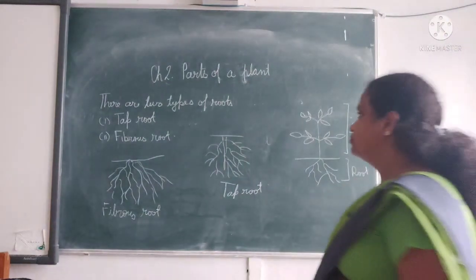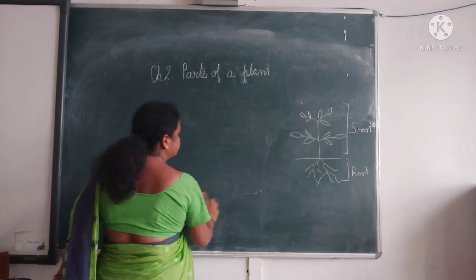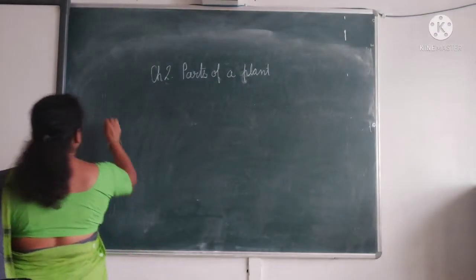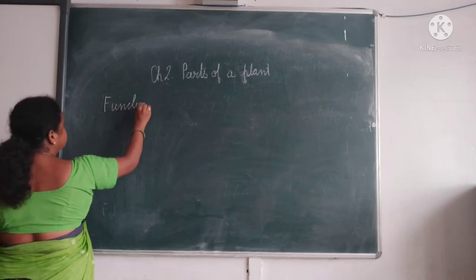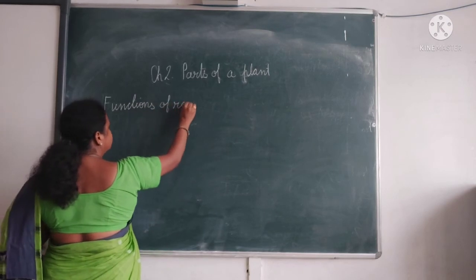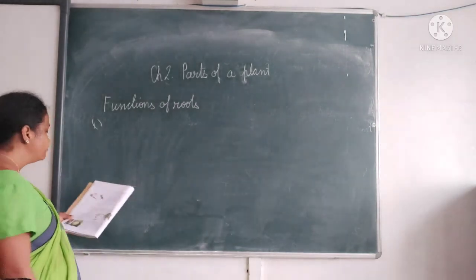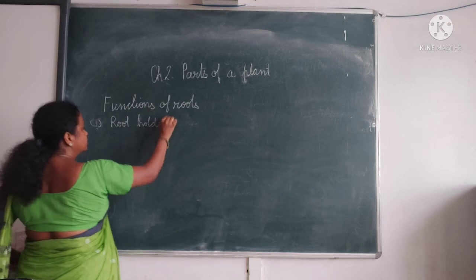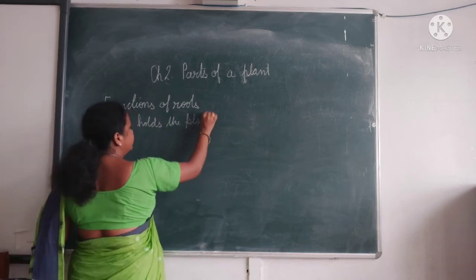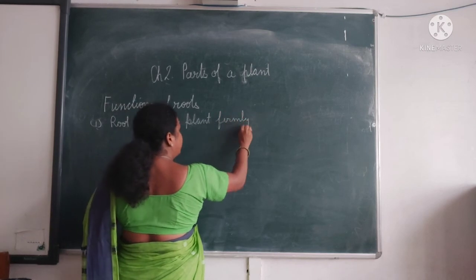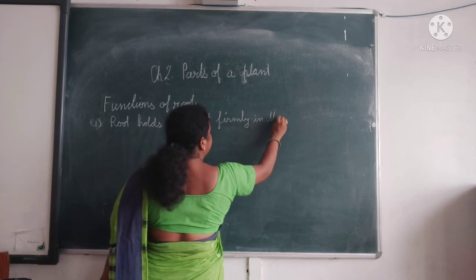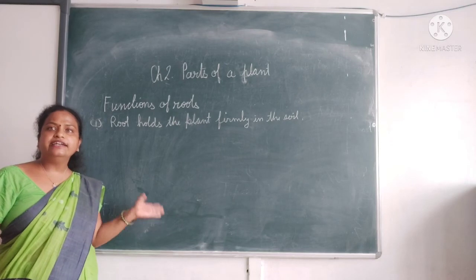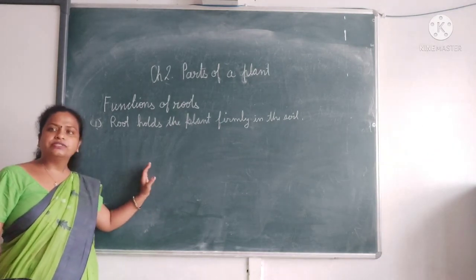Now the second part: functions of the root. First, roots hold the plant firmly in the soil — they help the plant to stand upright. If the root is not strong, the plant will fall.